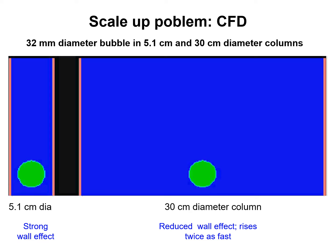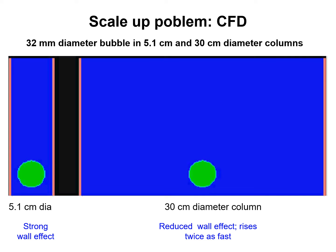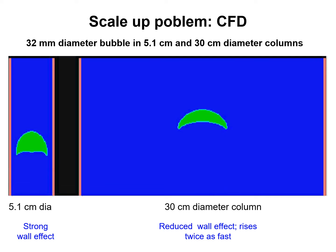Let's do another computational experiment. We take a single bubble of 32 millimeters in size and place it in columns of two different diameters: a 5.1 centimeter diameter column and a 30 centimeter diameter column. The bubble of 32 millimeters rises faster in the 30 centimeter column than in the 5 centimeter column, because wall effects exert a drag on the bubbles.